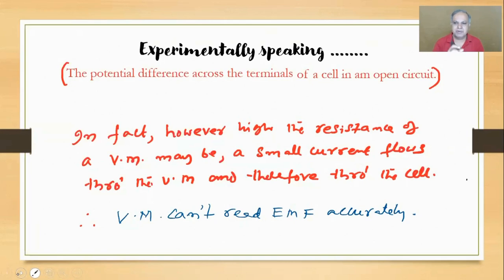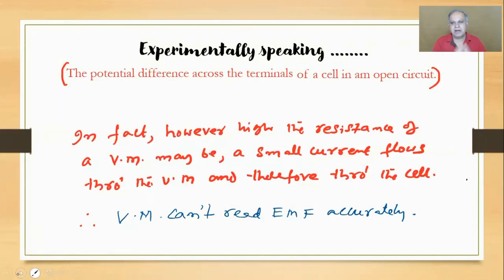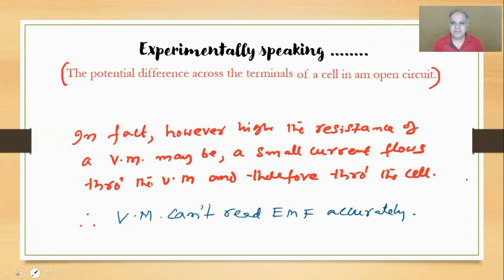The voltmeter's design is that there is a coil inside - you pass current through that coil which is placed between two magnetic poles. The magnetic field applies a torque and that's how the coil and pointer turn. We try to make the resistance of the voltmeter as high as possible, so a small current flows, but therefore you measure an approximation of the EMF.